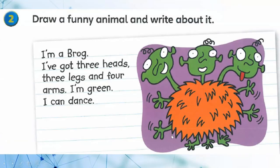Draw a funny animal and write about it. I'm a Brock. I've got three heads, three legs and four arms. I'm green and I can dance.